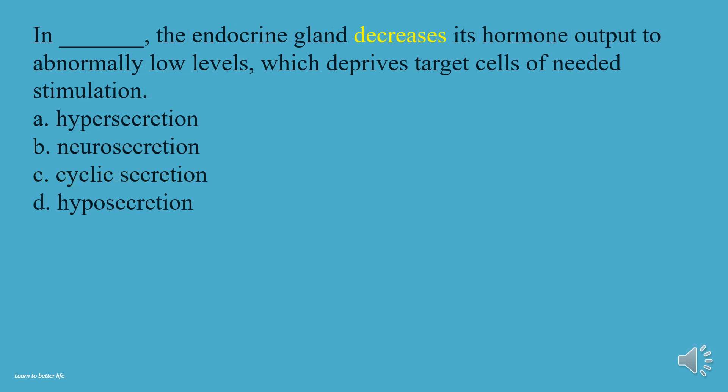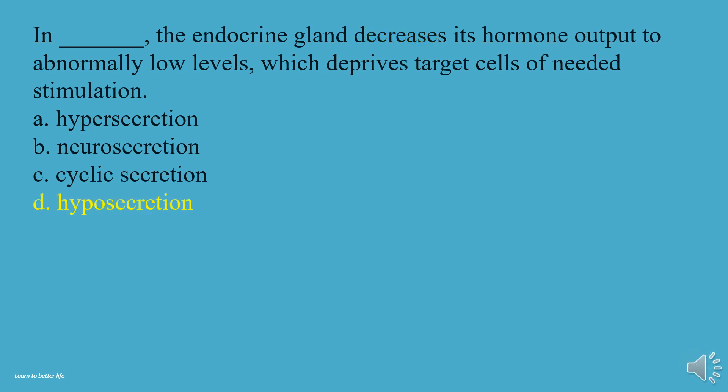In what condition does the endocrine gland decrease its hormone output to abnormally low levels, which deprives target cells of needed stimulation? A, Hypersecretion. B, Neurosecretion. C, Cyclic secretion. D, Hyposecretion. The answer is D, Hyposecretion.